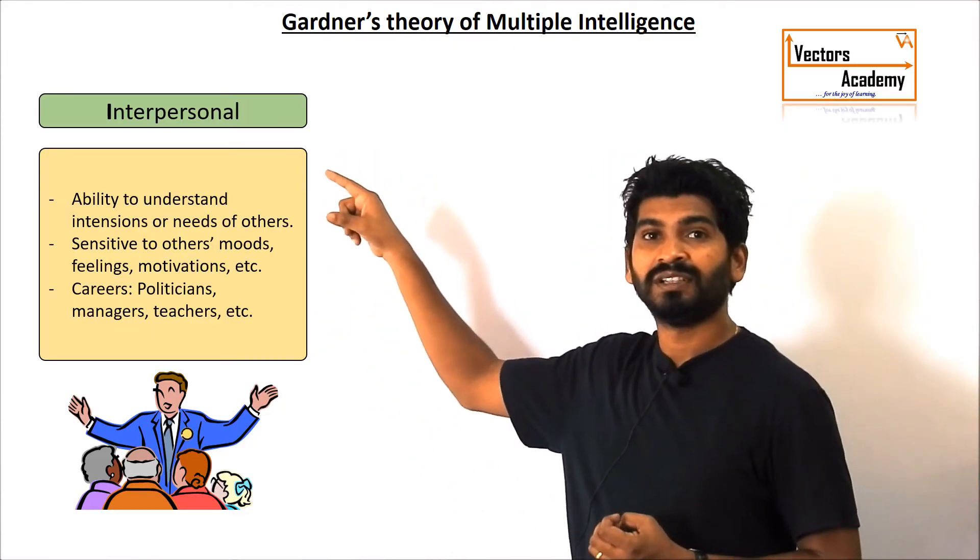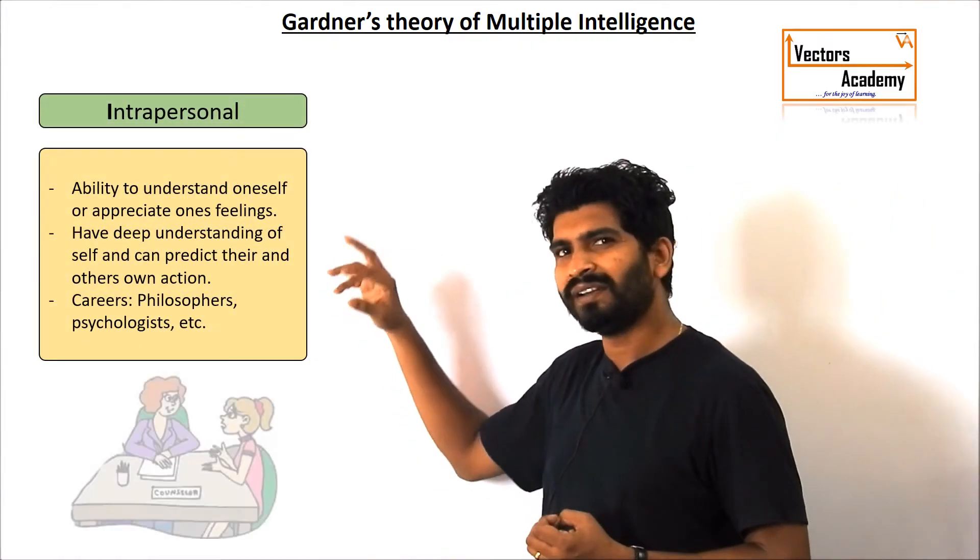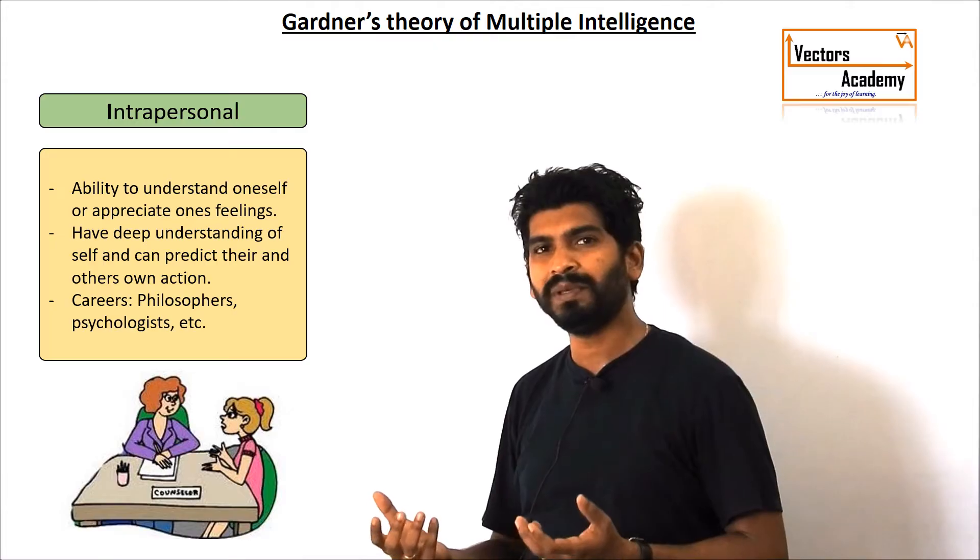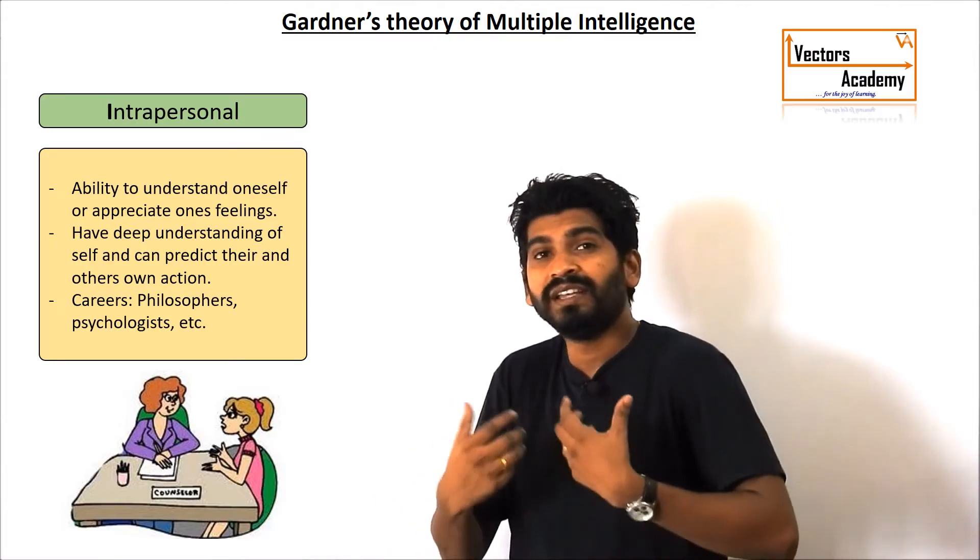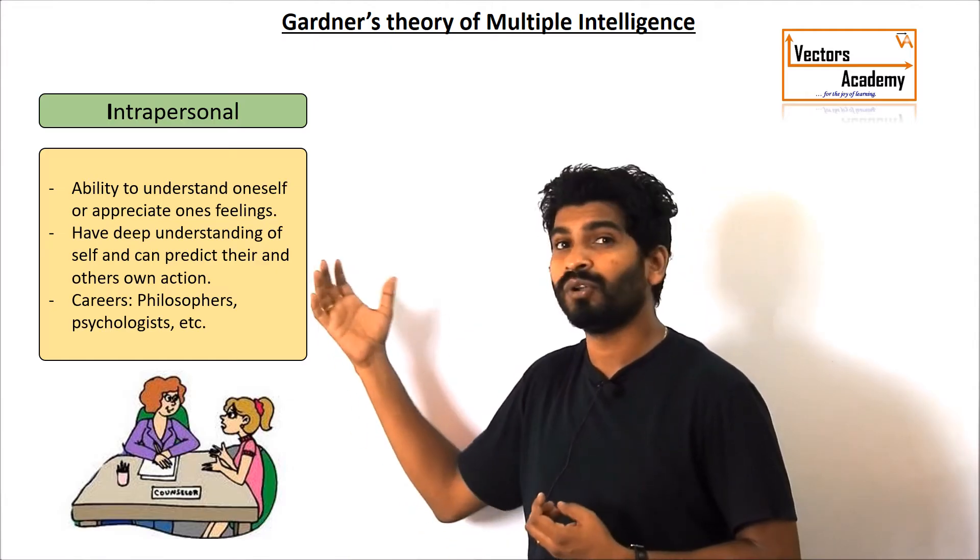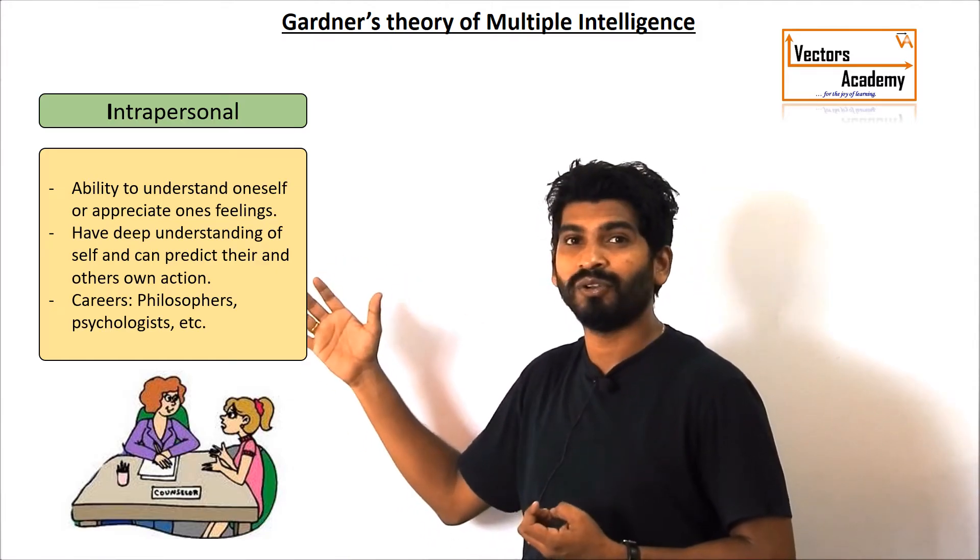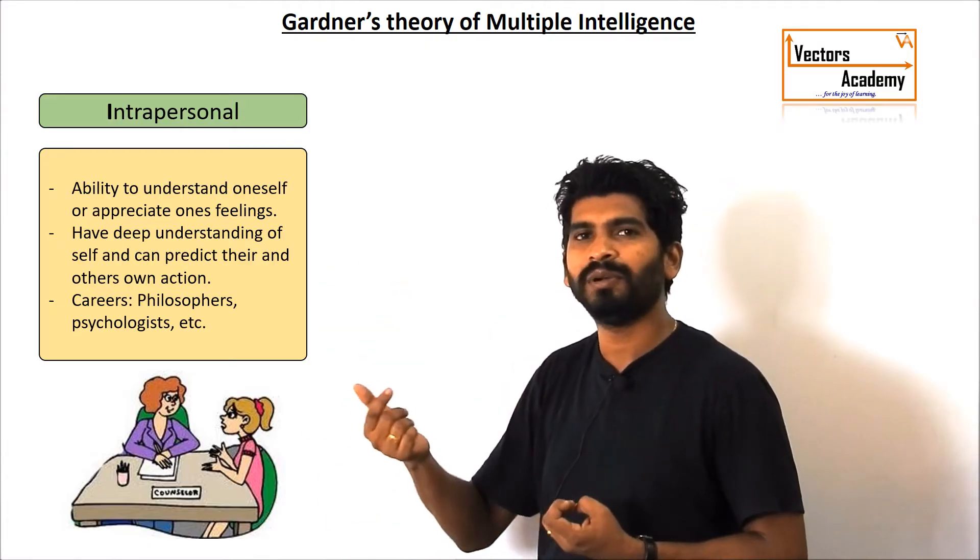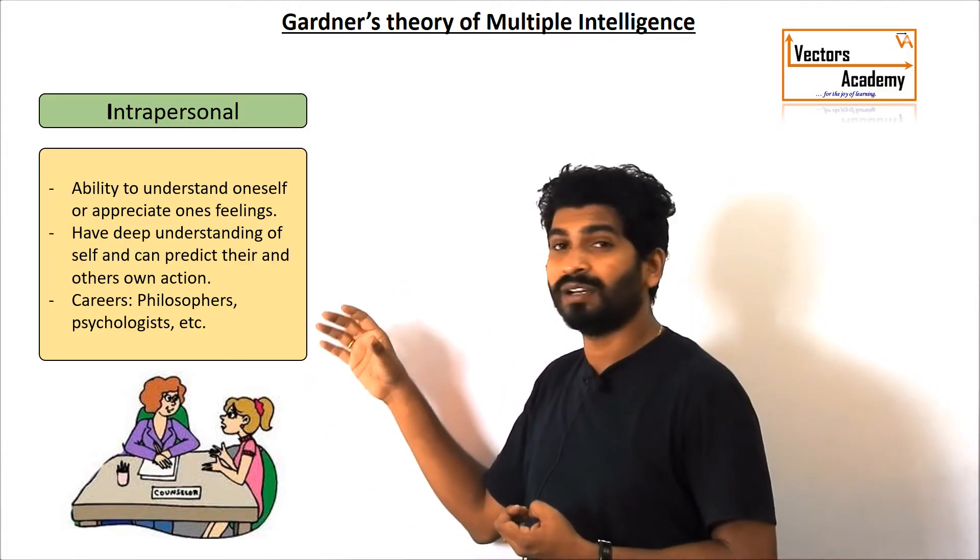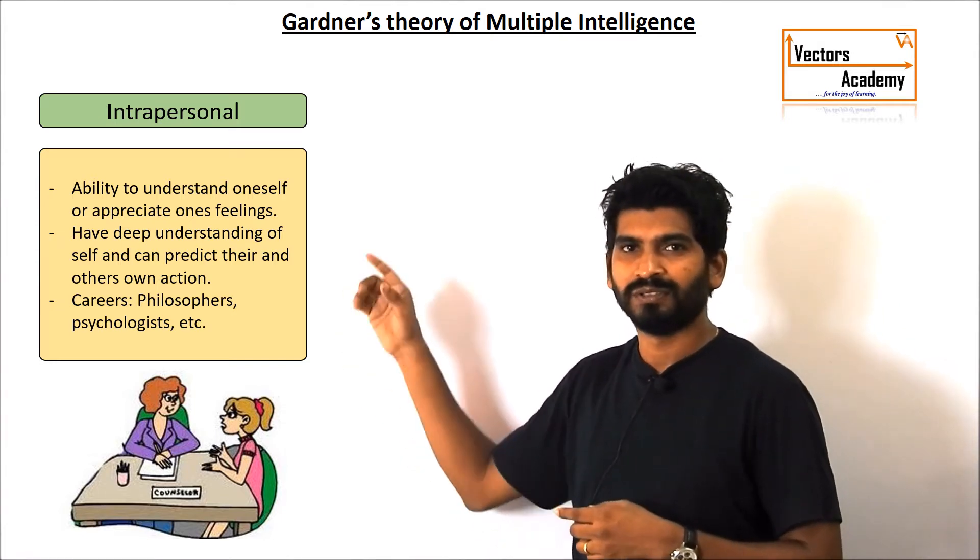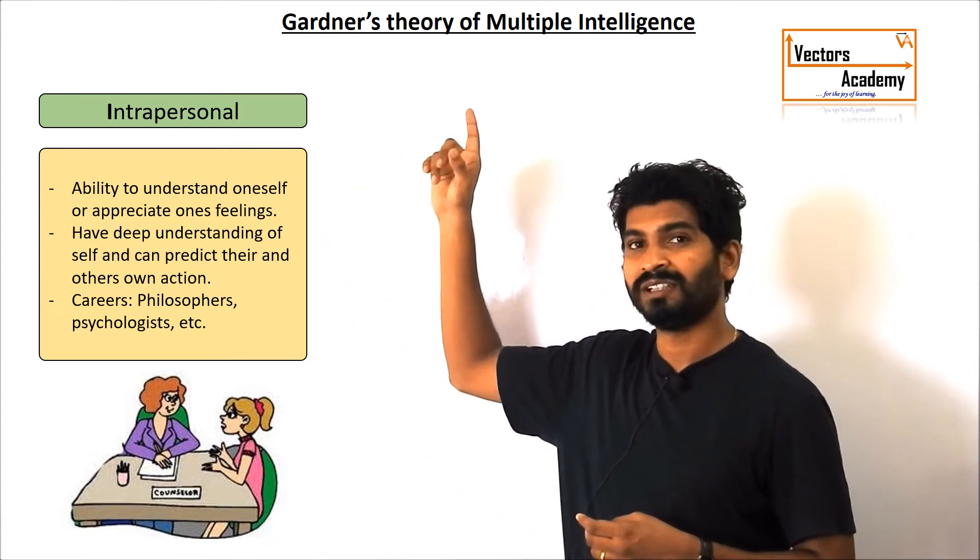Next comes the intrapersonal intelligence. This is quite related with the previous one but in this the person should be able to get what are the inner feelings of another person or himself as well. Such as the psychologists do. Psychologists or you can say clinical psychologists who are able to understand what a person is thinking from inside and then they give them proper counselling and so on. So this is intrapersonal and that was interpersonal.